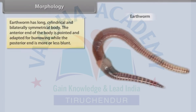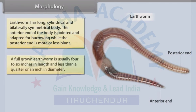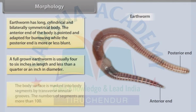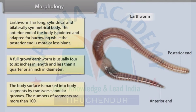Morphology: Earthworm has a long, cylindrical and bilaterally symmetrical body. The anterior end of the body is pointed and adapted for burrowing, while the posterior end is more or less blunt. A full-grown earthworm is usually 4 to 6 inches in length and less than a quarter of an inch in diameter. The body surface is marked into body segments by transverse annular grooves, with more than 100 segments.